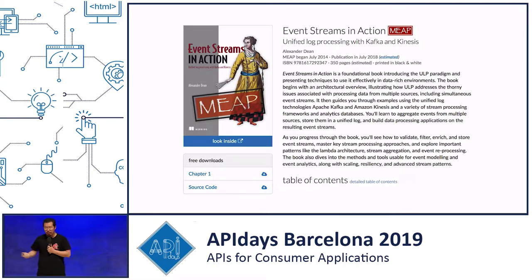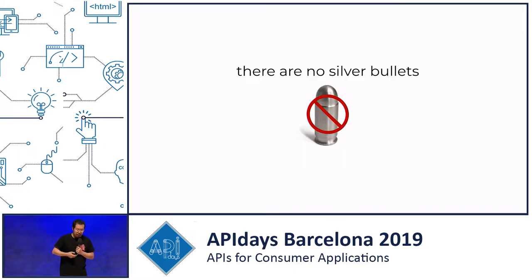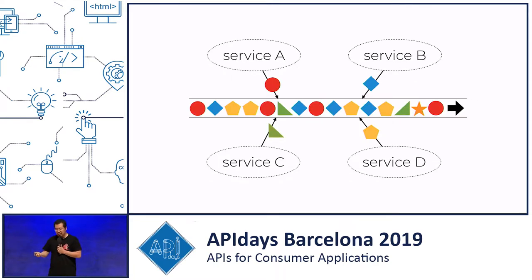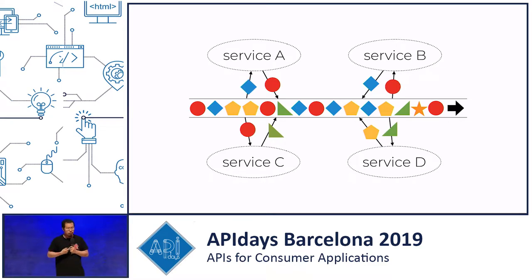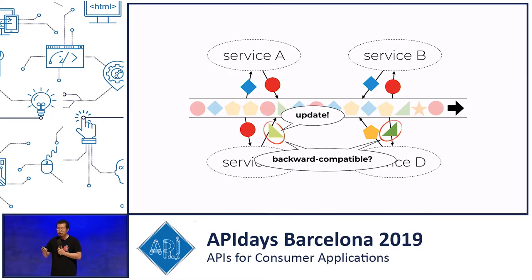This is not a new idea — it's been around for many years. Databases have this idea called a transaction log, and in the world of distributed systems you also have the unified log. However, this is still not a silver bullet by any means. For starters, you have all these services publishing events to a stream and consuming events from the stream. So what do you do when you need to update one of the events a service is publishing? How do you make sure you don't accidentally break other systems that depend on your events?